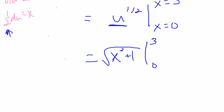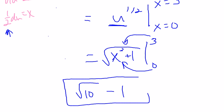Which is pretty easy to do. I plug 3 in to this thing, which gives me root of 3 squared plus 1, which is 9 plus 1, which is 10, and then I need to subtract, plugging 0 into x for this thing. So that just gives me root 1, which is 1. And that is my answer.